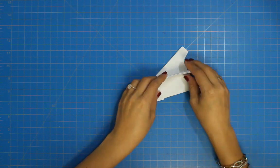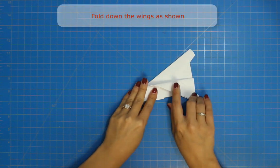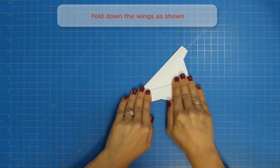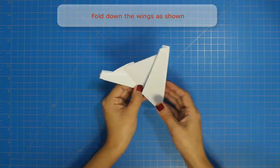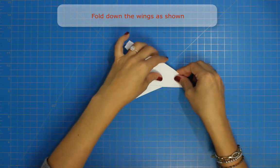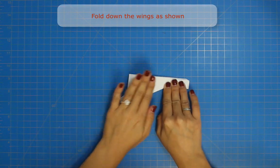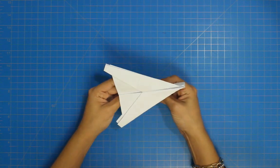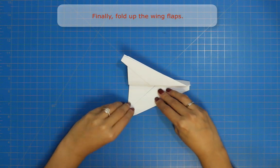Next, fold down both wings as shown. Finally, fold up the wing flaps.